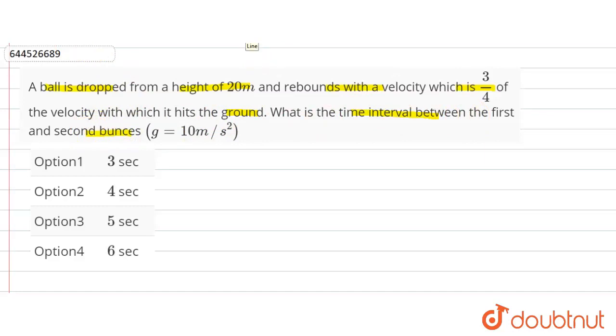So here, see, this is the height. Assume this height is 20 meters, and a ball is dropped from here. So after some time it will strike the ground here with velocity, let's assume v.